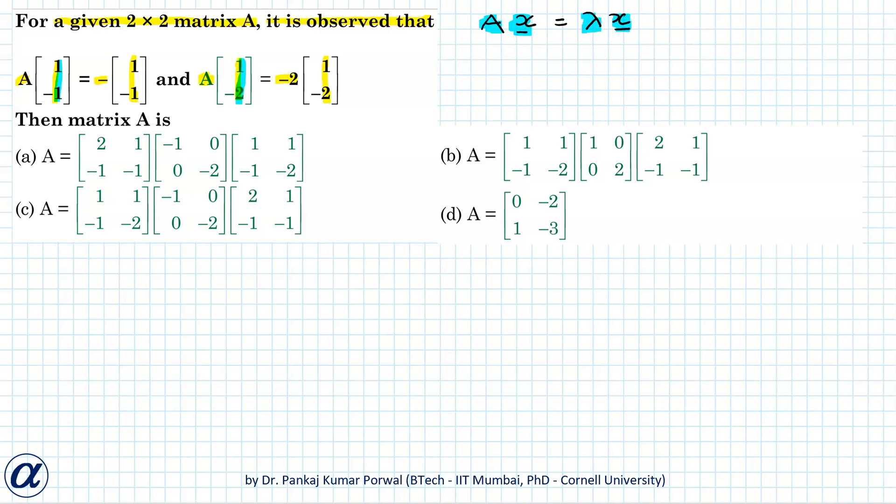And that factor lambda is the eigenvalue corresponding to the eigenvector. So here the vectors [1, -1] and [1, -2] are the eigenvectors of matrix A.